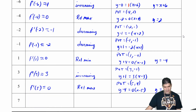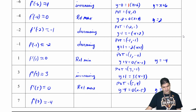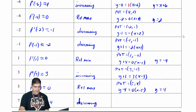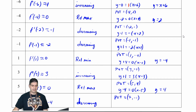Finally at x equals 7, f prime of 7 is approximately negative 4, and the function is decreasing — the graph is going down. Our point of tangency is 7 comma negative 1, so the equation is y plus 1 equals negative 4 times x minus 7.